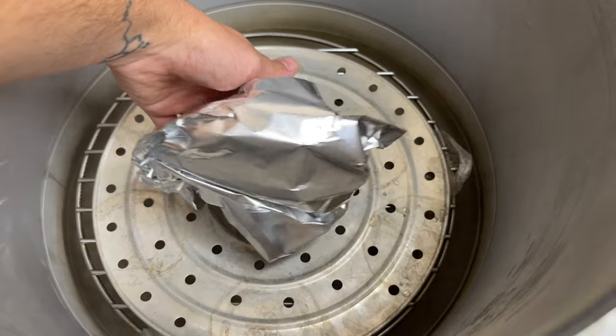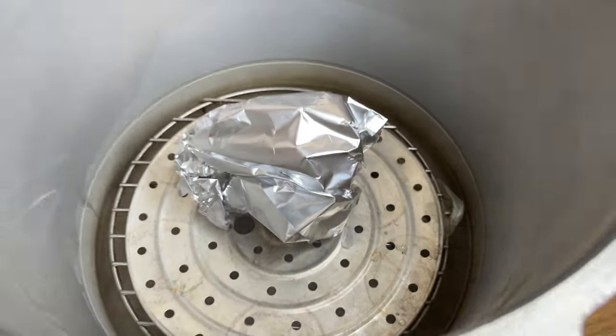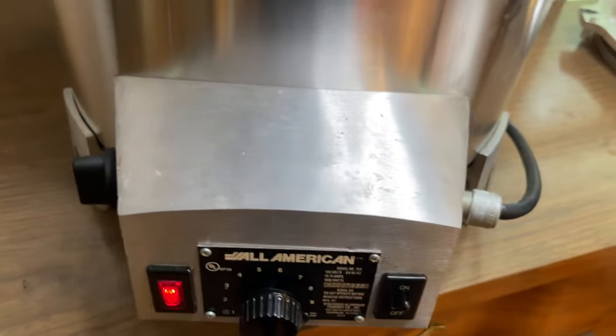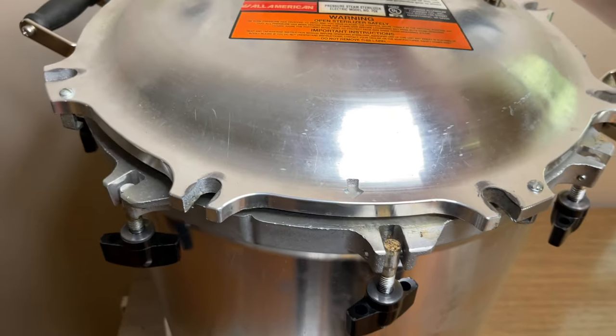I'm using a pressure cooker to sterilize the blade, but if you don't have one you could use a canning pot with the lid on and boil it for two hours.